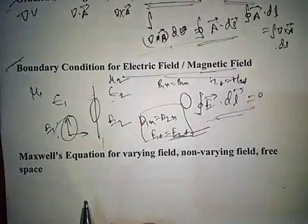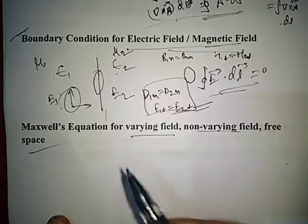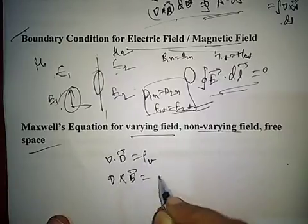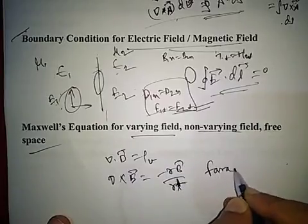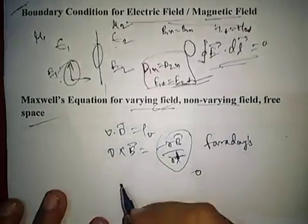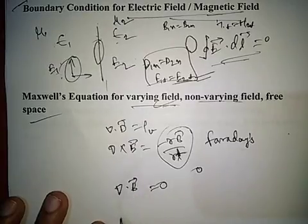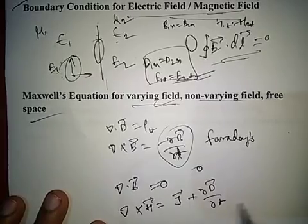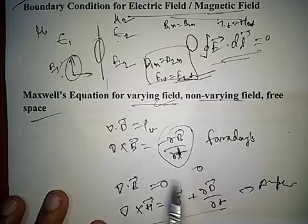Next is Maxwell's equations — all four are very important, whether for varying field, non-varying field, or free space. These are: del dot D equals rho_v; del cross E equals minus del B/del t (Faraday's law for varying fields, zero for static); del dot B equals 0; and del cross H equals J plus del D/del t (Ampere's circuit law).